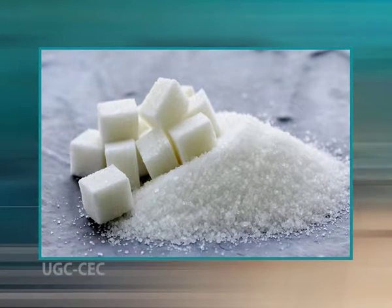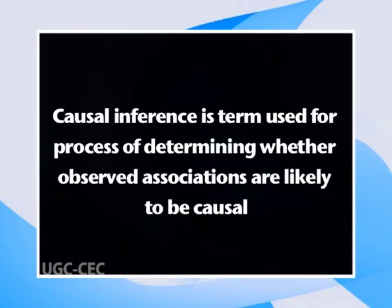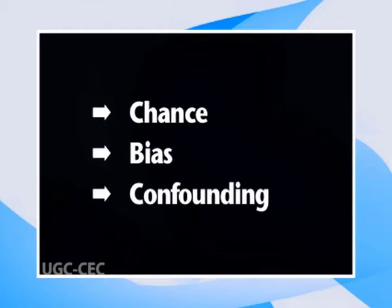Risk factors are those factors that have a direct link to the cause of the disease but are not sufficient to cause the disease — that is, they heighten the chance of contracting a disease condition but are not enough by themselves, for example refined sugar. Causal inference is the term used for the process of determining whether observed associations are likely to be causal. Before an association is assessed for the possibility that it is causal, other explanations such as chance, bias, and confounding have to be excluded.